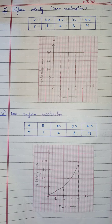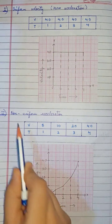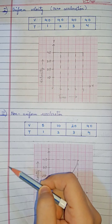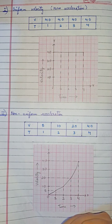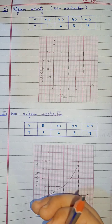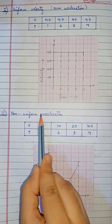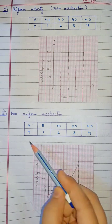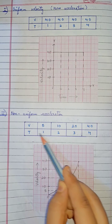Welcome back to my channel. Today in this video we are going to study the third situation of the velocity-time graph, that is non-uniform acceleration. Non-uniform acceleration occurs when the rate of change of velocity of a body is unequal in equal intervals of time — it is said to be non-uniform acceleration.